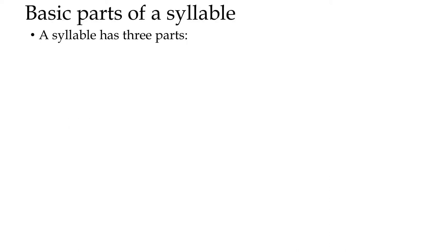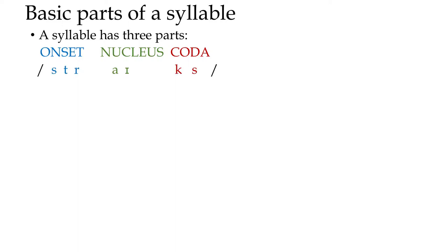The basic parts of a syllable are three: there's an onset, a nucleus, and a coda. Onset means beginning. Nucleus means something in the middle — you probably recognize that word from biology. And if you're a musician, you might recognize coda as meaning the ending part of a song, the part that appears at the very end. And that's basically what happens.